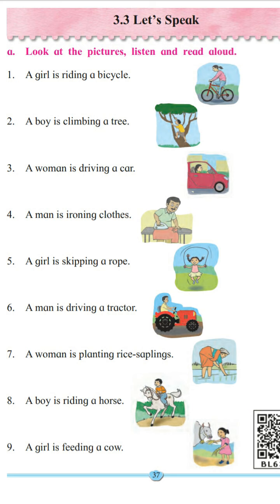Number 7. A woman is planting rice saplings. What action is the woman doing here? The action of planting rice saplings. What is the action? Planting. So the verb is planting.